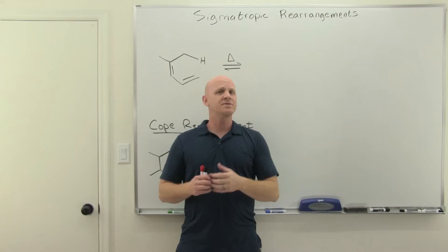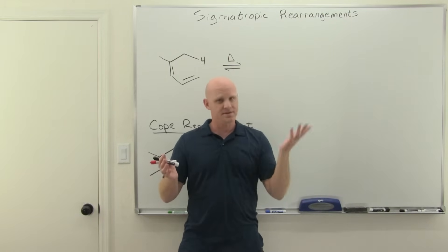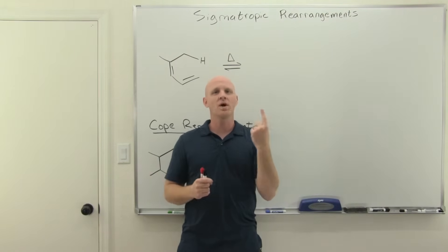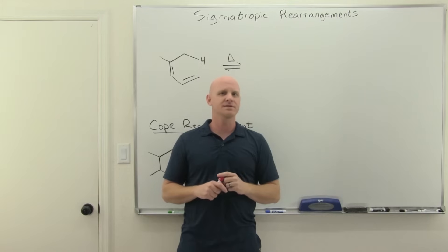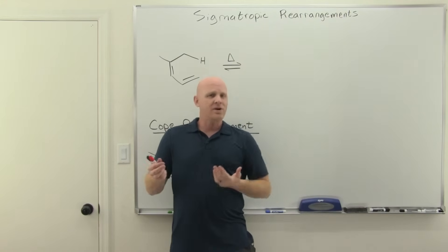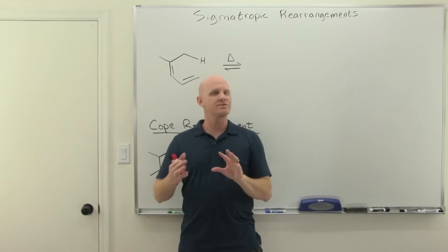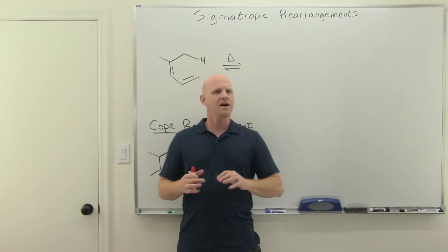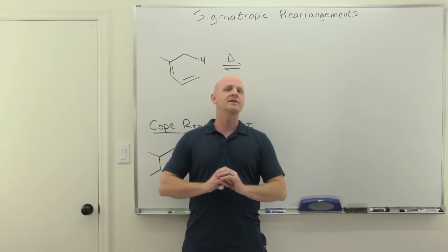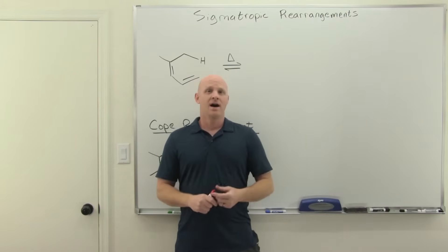In a sigma-tropic rearrangement, the carbon skeleton undergoes a rearrangement — hence the name — in which one sigma bond is broken and one sigma bond is formed. There's a special numerical notation associated with sigma-tropic rearrangements that students often struggle with, so we are going to lay that out clearly so there's no confusion.